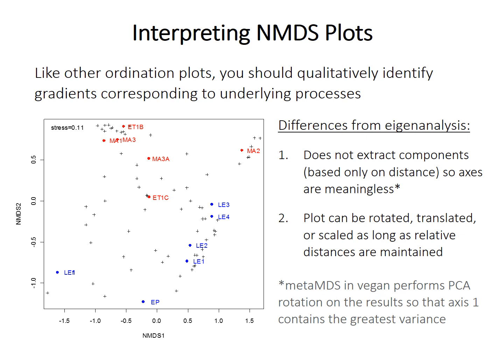Unlike PCA, the points in NMDS are arranged by an iterative process, so the axes don't actually mean anything. Remember, in PCA the axes correspond to eigenvectors that explain a particular amount of variance. Because the NMDS axes are not meaningful, you can rotate, translate, or scale the plot as long as you retain the relative distances. It's worth noting that in R, after obtaining the ordination results, it performs a PCA on them so that axis 1 represents the greatest variance in ordination space — but this is in ordination space, not the original data.